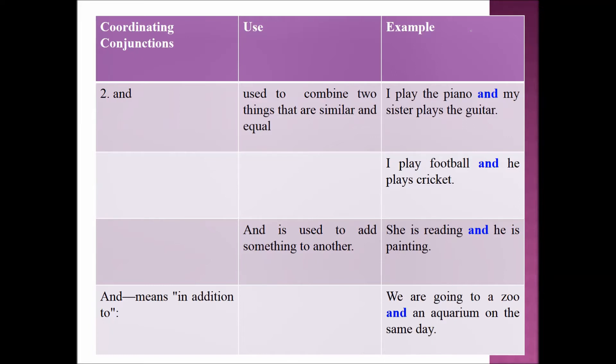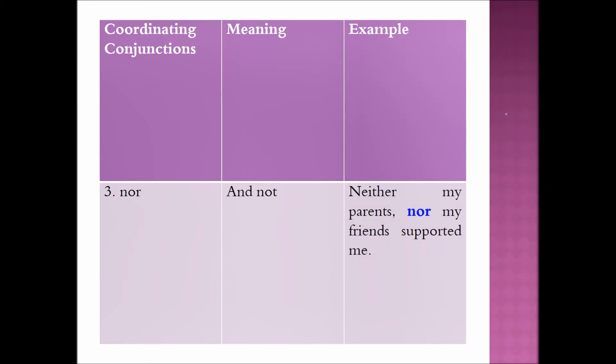AND means 'in addition to'. Example sentence: 'We are going to a zoo and an aquarium on the same day.' The third coordinating conjunction is NOR. NOR means 'and not'. Example sentence: 'Neither my parents nor my friends supported me.'